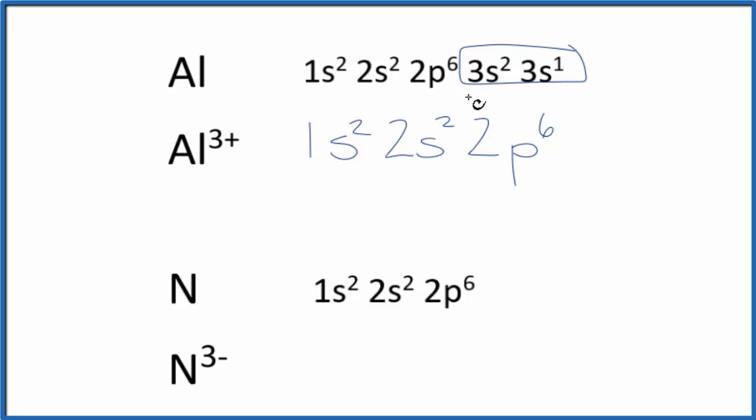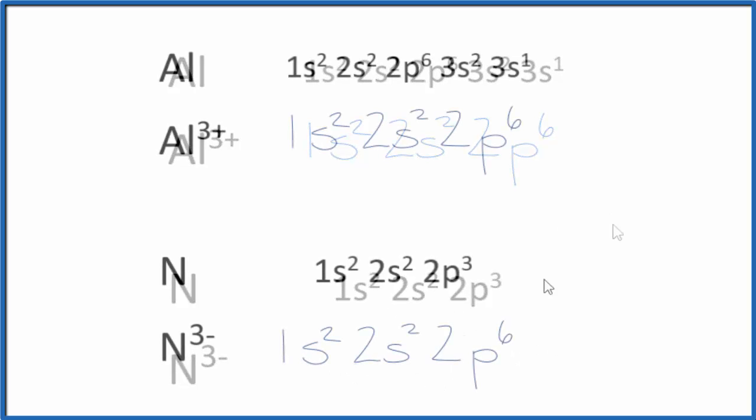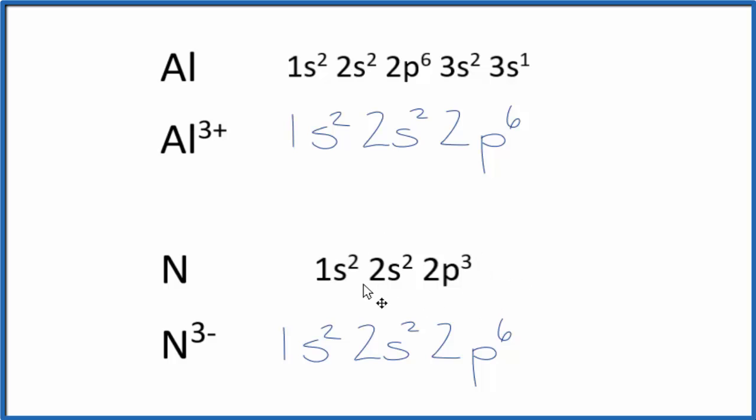For nitrogen, we need to gain these three electrons, these three valence electrons, to get that noble gas configuration. That'll look like this. So for nitrogen to get this second energy level full, we need three more. So we add three more, we have a 3 negative ionic charge, and we end up with the same electron configuration as a noble gas.